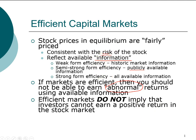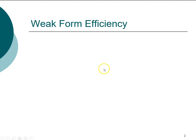An efficient market does not mean you cannot earn a positive return — it simply means the return should be consistent with the risk of the stock. If the market is not efficient, information is not incorporated into stock prices. In a capitalist society we let the market handle resource allocation, meaning the most valuable companies should have the highest stock prices. If stock prices don't reflect available information, the market is not the best way to allocate resources.